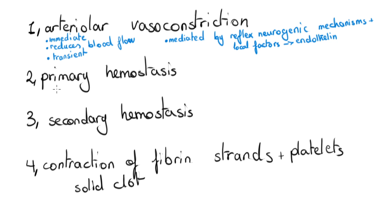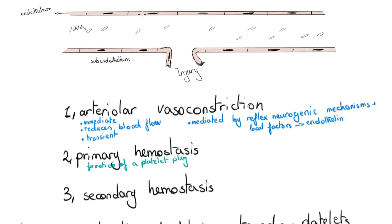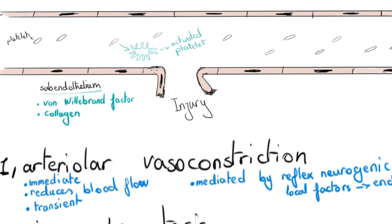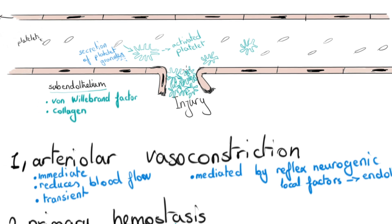The second step is primary hemostasis, or the formation of the platelet plug. A disruption of the endothelium exposes subendothelial factors lying right beneath it, including von Willebrand factor and collagen, which promote platelet adherence and activation. Platelets change their shape from discs to flat plates with spiky protrusions, increasing their surface area. Platelets also secrete their granules, releasing chemicals that recruit more platelets, leading to aggregation and formation of the primary platelet plug.